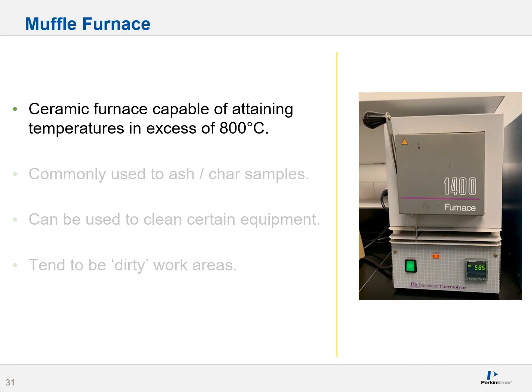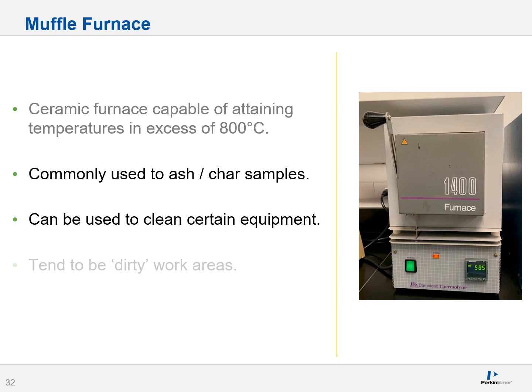This is not to be confused with a muffle furnace. A muffle furnace is a ceramic furnace, generally speaking, capable of achieving temperatures in excess of 800 degrees Celsius — remember, an oven tops out at about 200 degrees. Muffle furnaces are commonly used to ash or char samples, basically to completely incinerate them, although they can also clean certain equipment. For example, in ICP mass spectrometry, organic-coated equipment is placed in a muffle furnace to burn off carbon. These tend to be dirty work areas, so if you're looking for high purity, adjust your storage parameters accordingly.